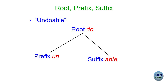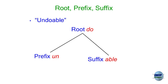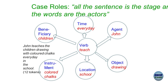There is an interesting example: 'unlockable.' Think about its meaning — it has two meanings: something that cannot be locked, and also something that can be unlocked. Then there are case roles — the main verb plays a very important role in a sentence. The verb associates with semantic roles: time, place, agent, object, location, instrument. These are called semantic roles, and they are supremely important for any question-answering system. For example: 'John teaches the children drawing with colored chalks every day in the school.' The instrument is 'colored chalks,' the agent is 'John,' the beneficiary is 'children,' the object is 'drawing,' the location is 'school,' and the time is 'every day.'